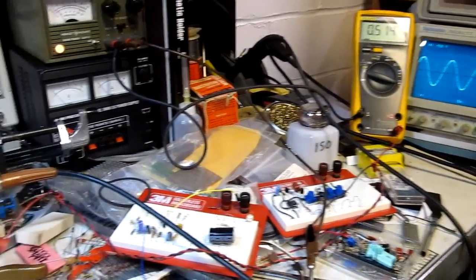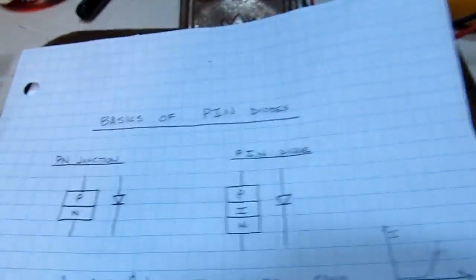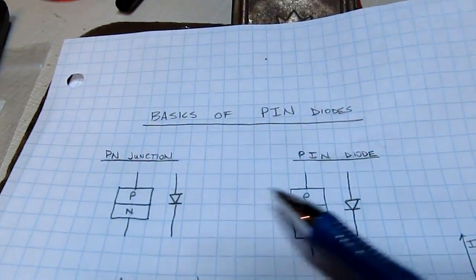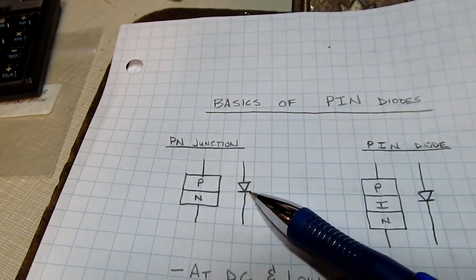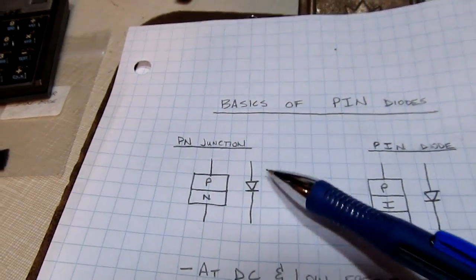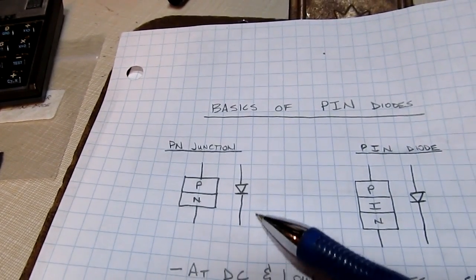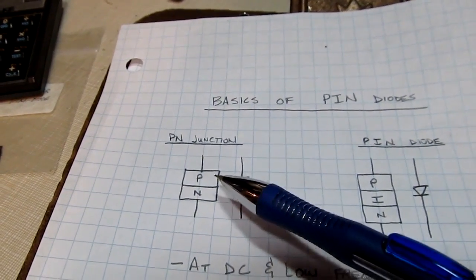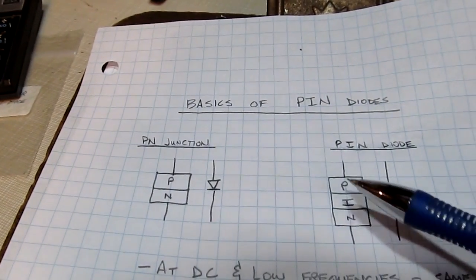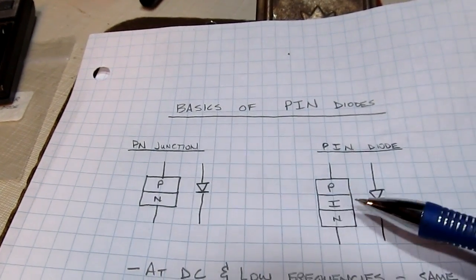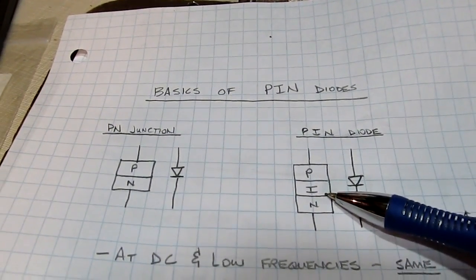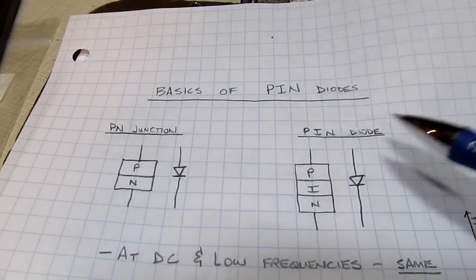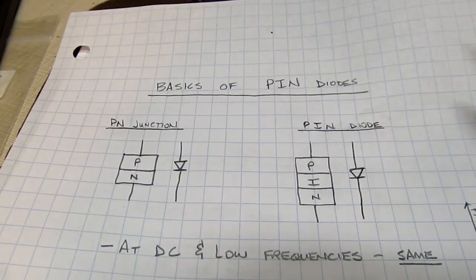In today's video we're going to talk about the basics of PIN diodes. PIN diodes are similar to the familiar PN junction diode, which allows current to flow in one direction and blocks it in the other. A PIN diode has the same structure except that we sandwich an intrinsic region of undoped semiconductor between the P and N type materials, and this has some interesting properties.